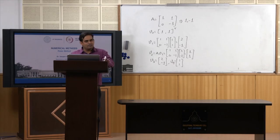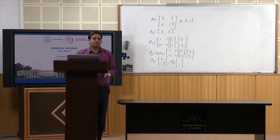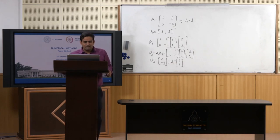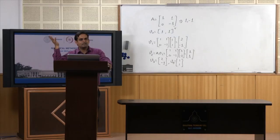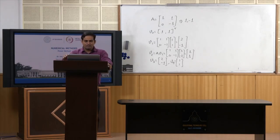So far the power method only computes the dominant eigenvalue. To find other eigenvalues, we can modify the power method using the method of deflation: we shift the dominant eigenvalue to 0 in a new matrix so that the second largest eigenvalue becomes dominant. For instance, if lambda1 is dominant, we construct a new matrix where lambda1 maps to 0, making lambda2 the new dominant eigenvalue, and then apply the power method to this new matrix. This technique is based on the deflation theorem.